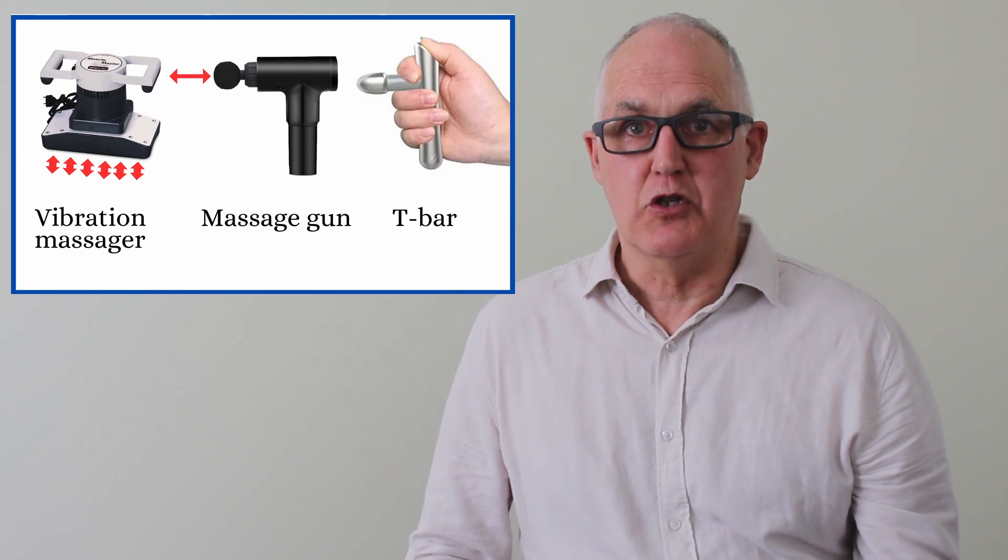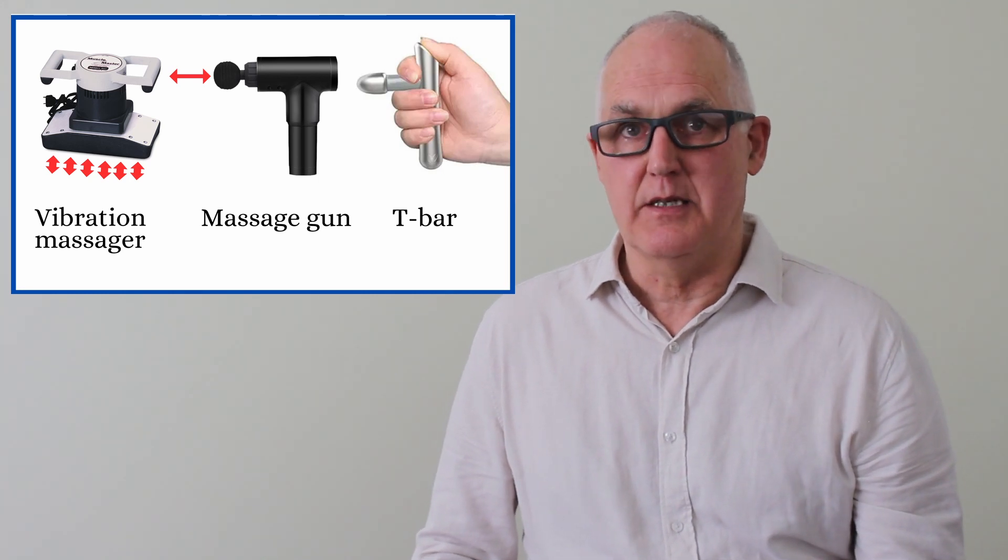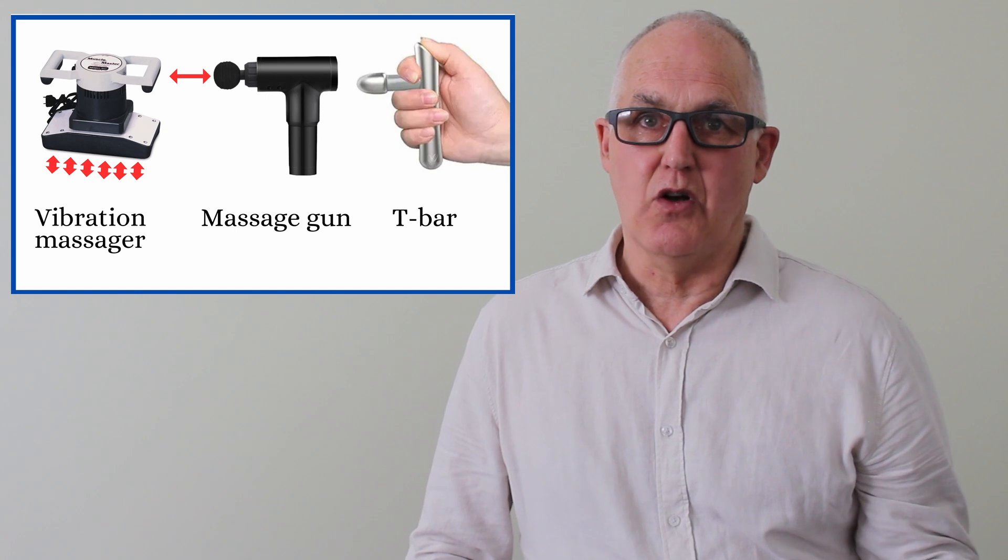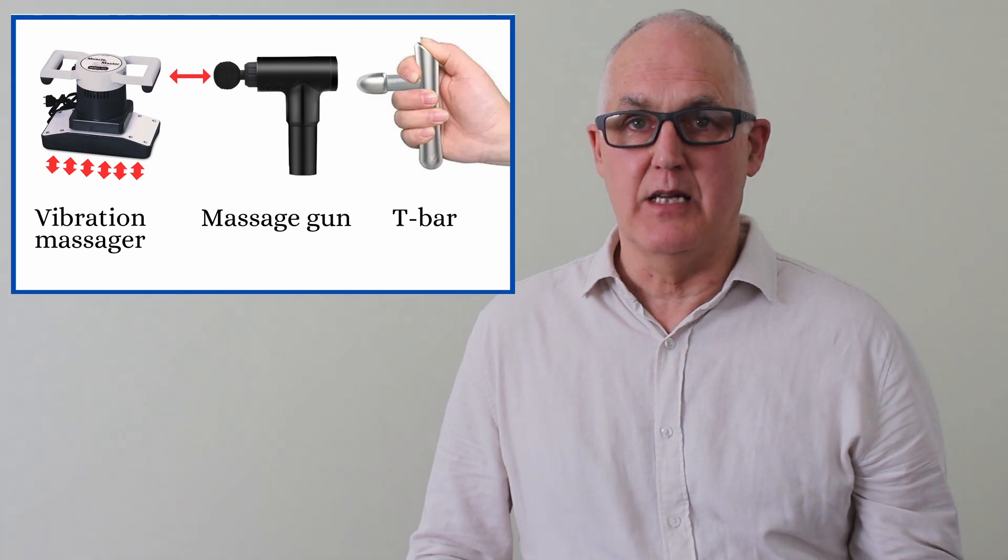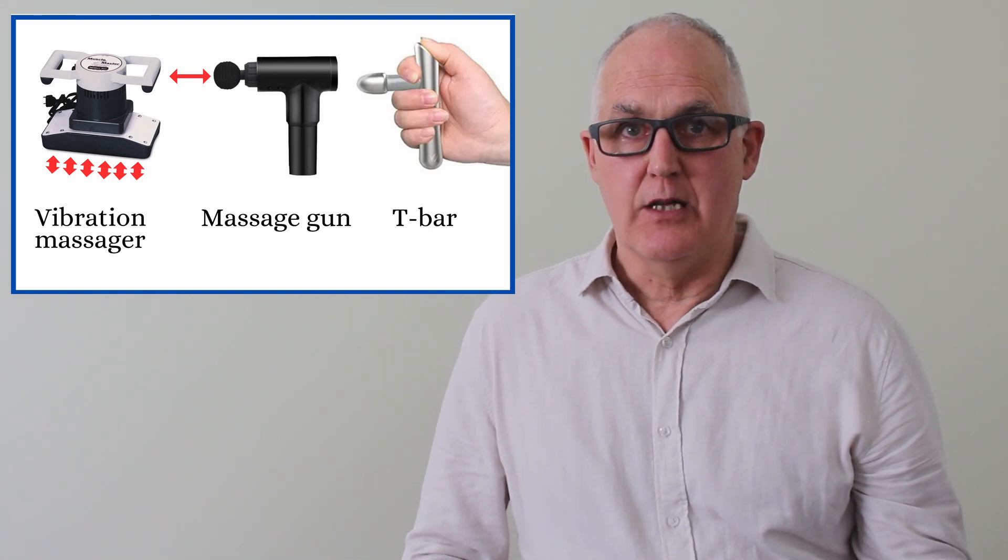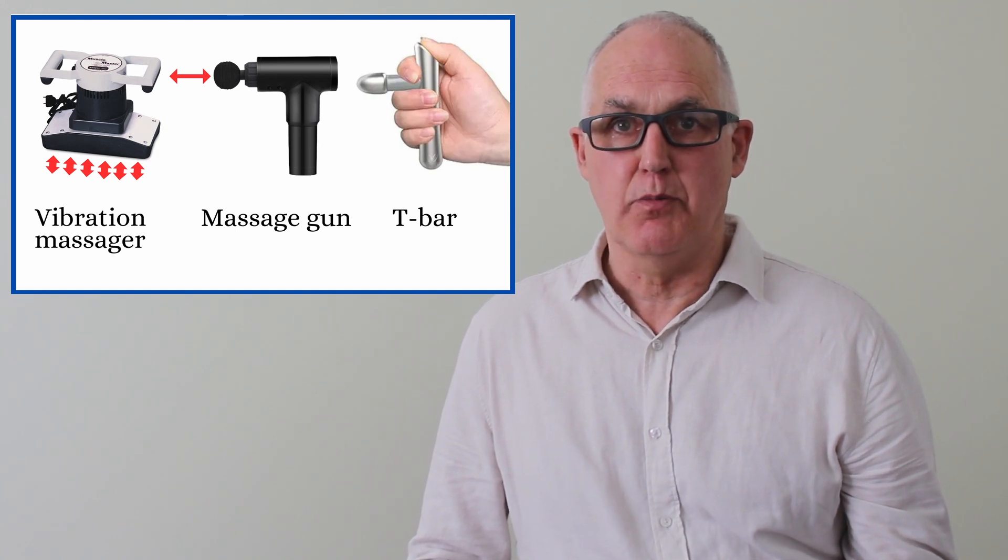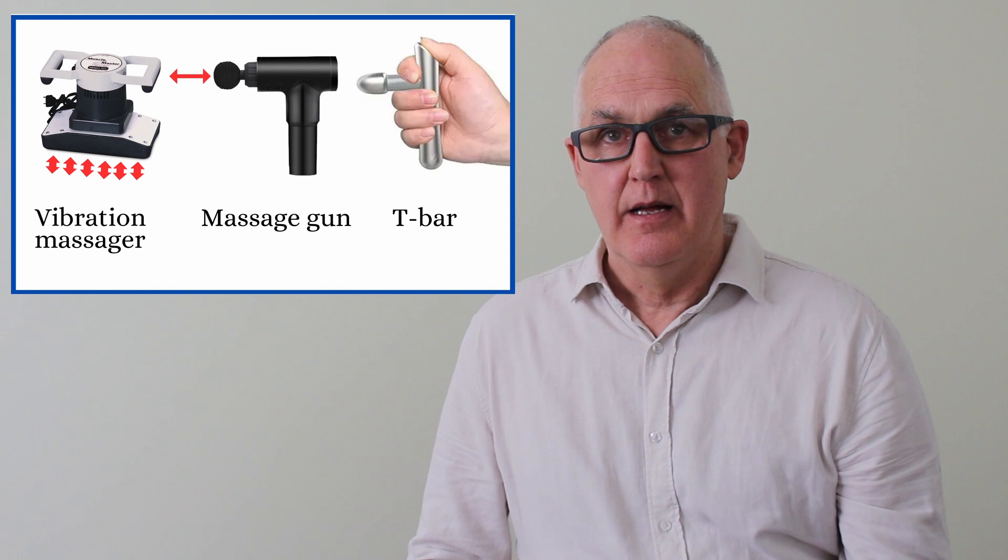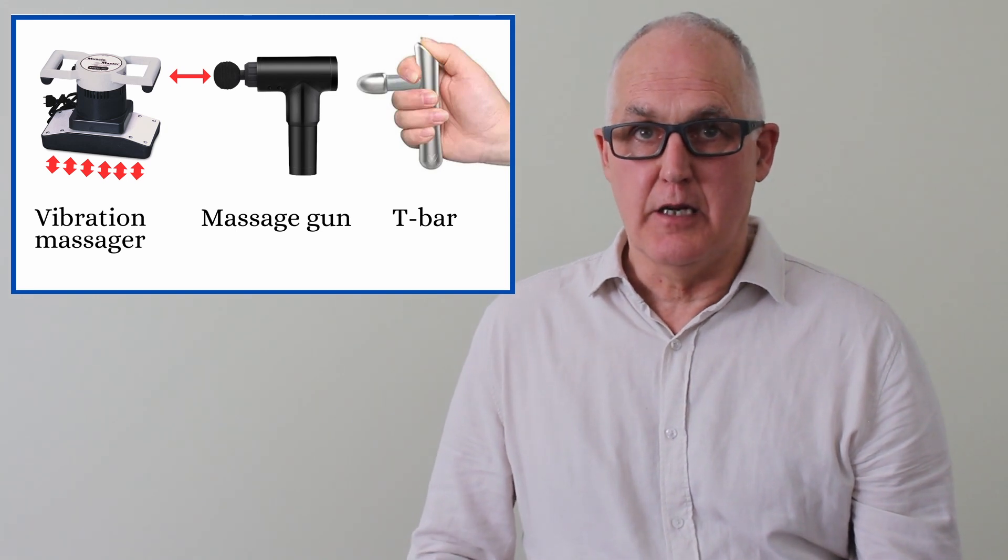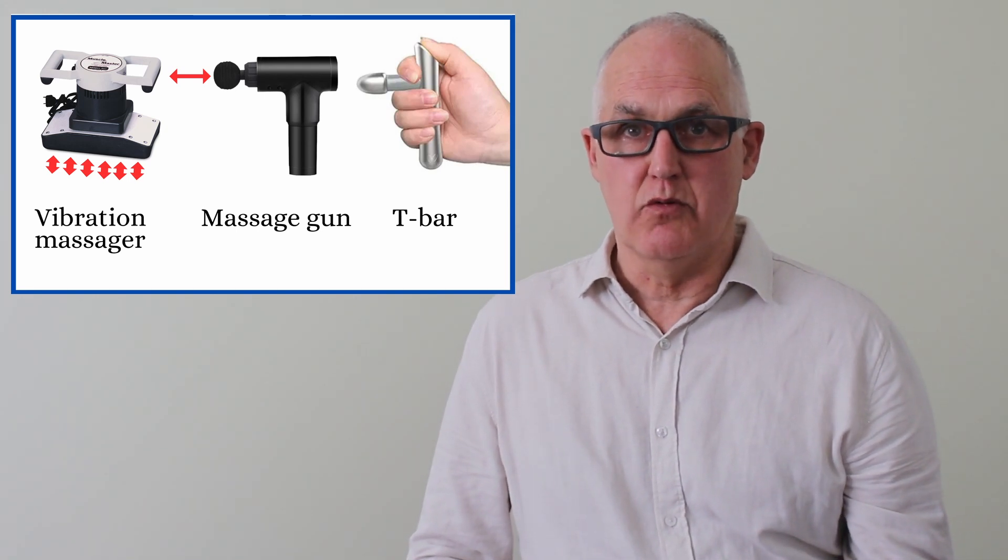Looking at this diagram, the machine on the left is a genuine vibration massager. You see it has a contact pad that sends in large amounts of vibration. The tool on the right is a T-bar which massage therapists use to apply deep painful pressure. Massage guns are basically T-bars with a jackhammer mechanism to help drive the head in.